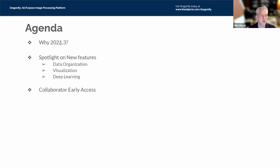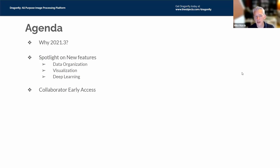Our agenda for today: first, why is this Dragonfly 21.3? Some of you may be on the current production release of 21.1, so we'll briefly explain the release nomenclature. Then we'll spotlight new features falling roughly into three categories: data organization, visualization, and deep learning. Finally, we'll tell you about opportunities for early access to some features for those who want to collaborate with the ORS team.